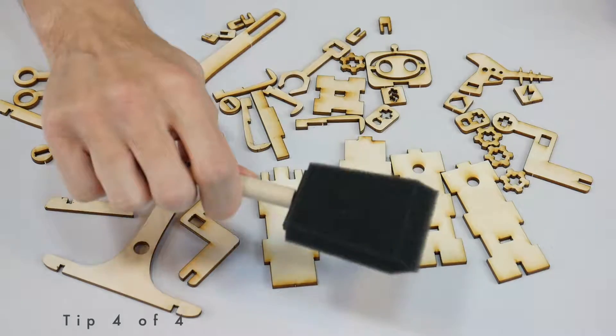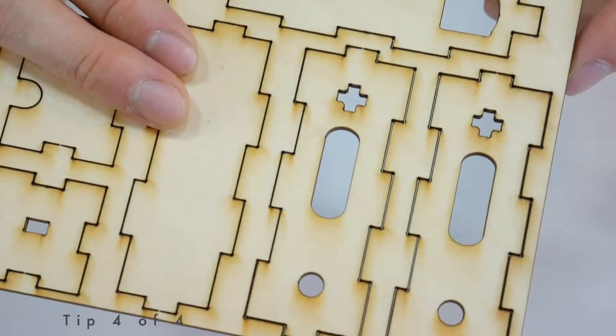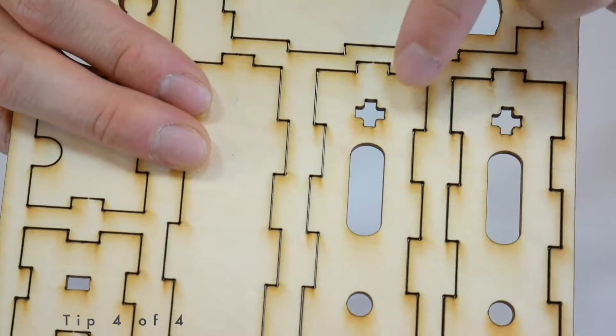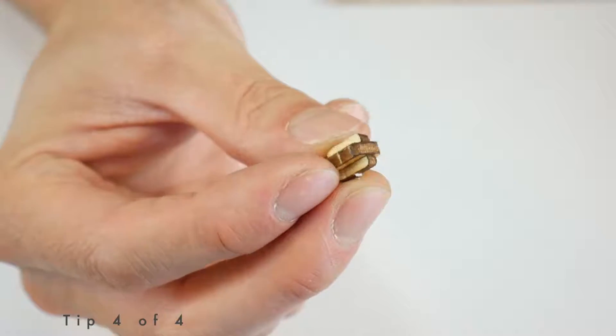Tip number four. If you want to paint the robot, I recommend doing that before assembling it. If you do choose to paint your robot, make sure not to get any paint inside any of the connection points or on the outside of any of the connectors.